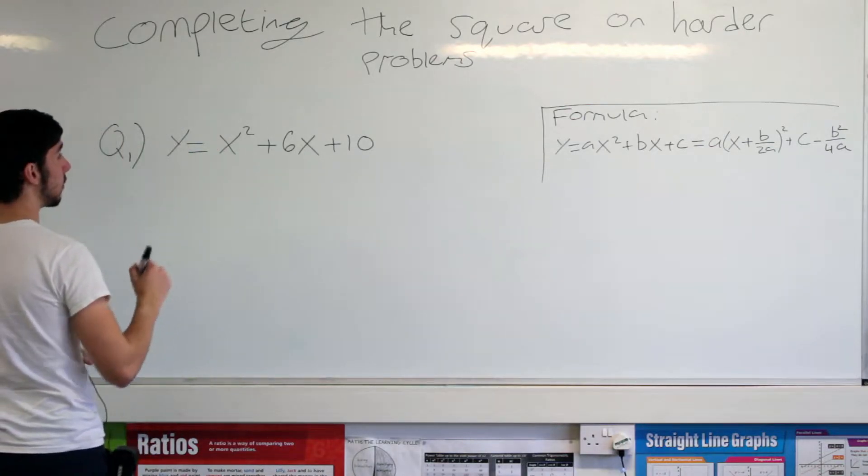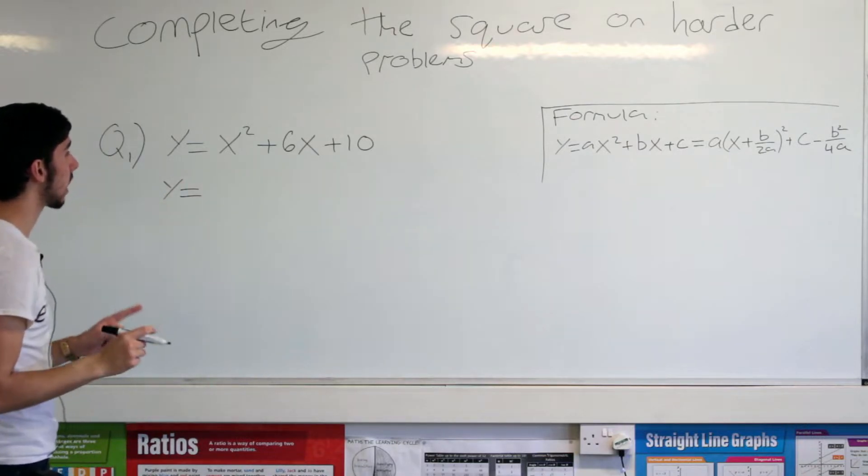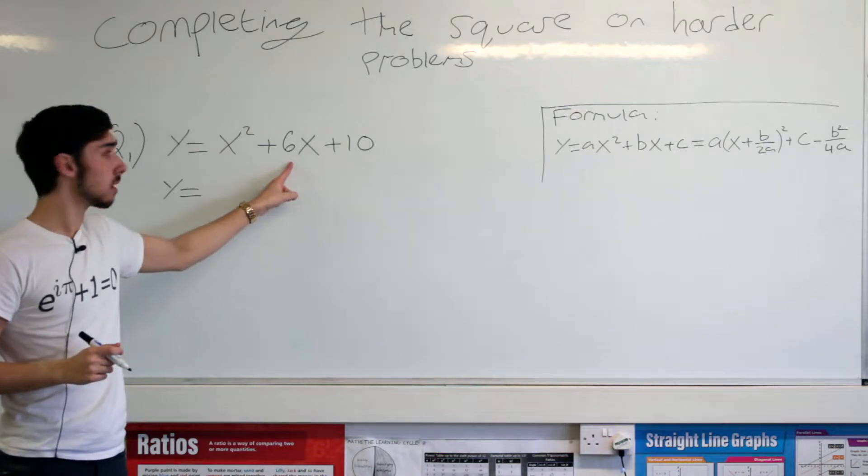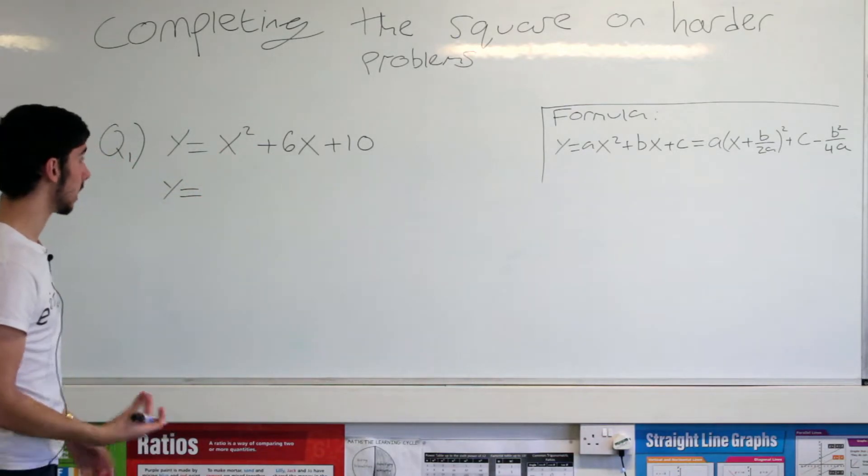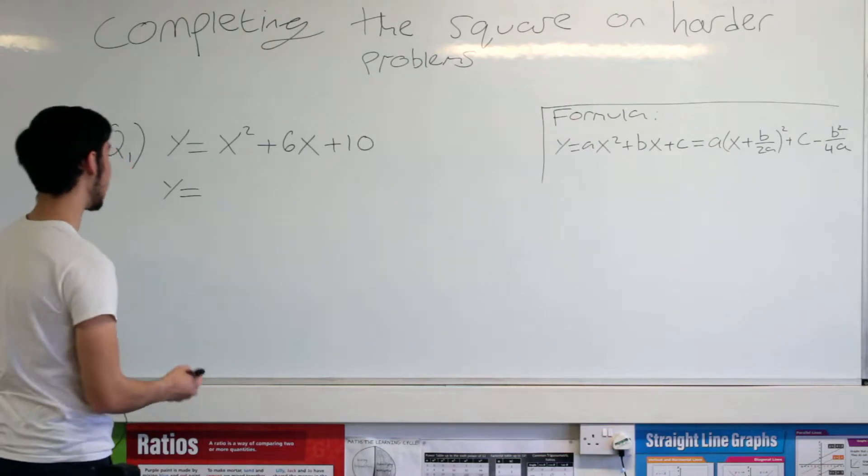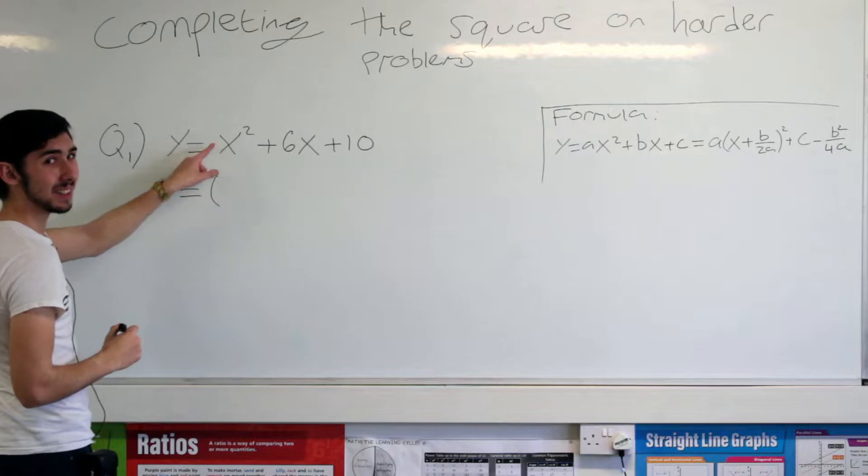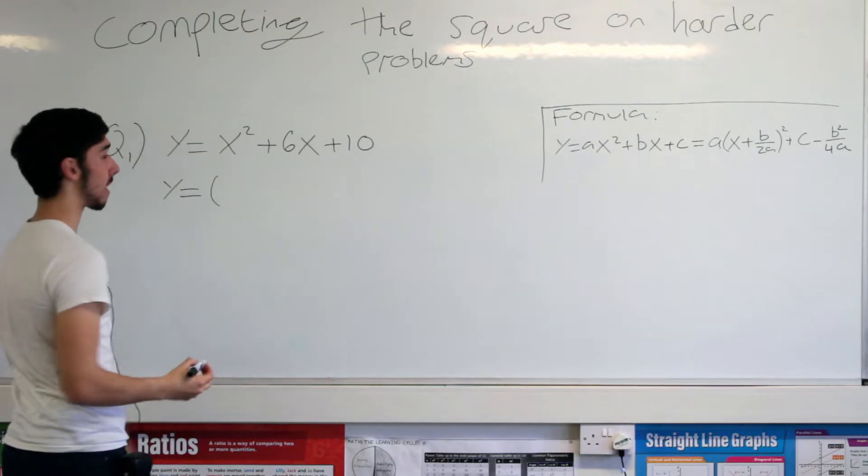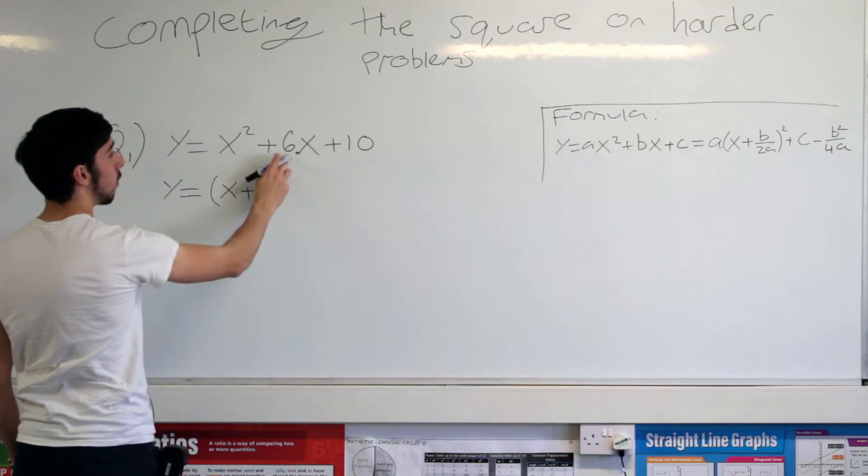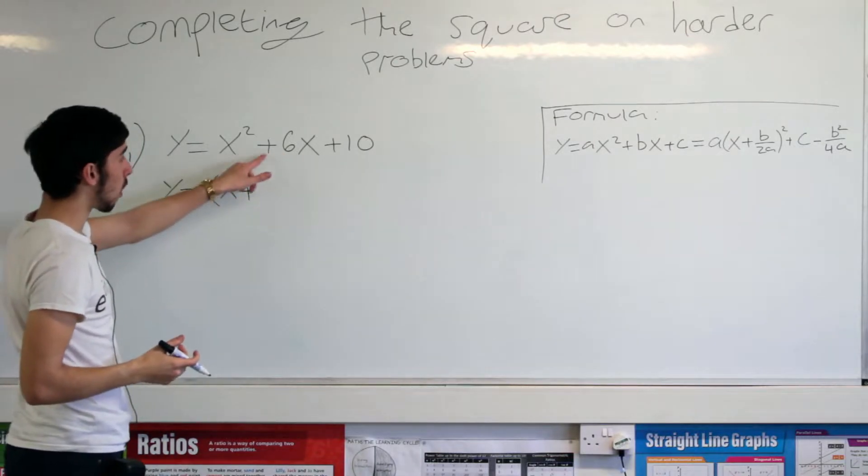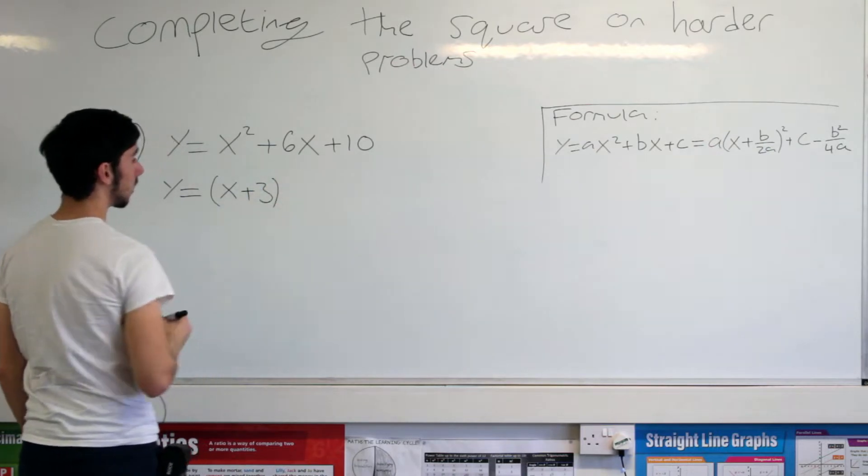So first things first, what do we do? Y is also going to be equal to, okay, that's our b, right? a is 1, b is 6, c is 10. We're looking at half of b, aren't we? Every time. So we're going to open up the bracket. We recognize that a is equal to 1 so we can do what we're about to do. We're just going to put an x there and we're going to add half of b. b is positive 6 so we're going to add 3 like so.